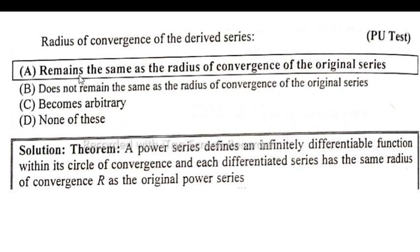So option A is correct — it remains the same as the radius of convergence of the original series. So option A is correct.